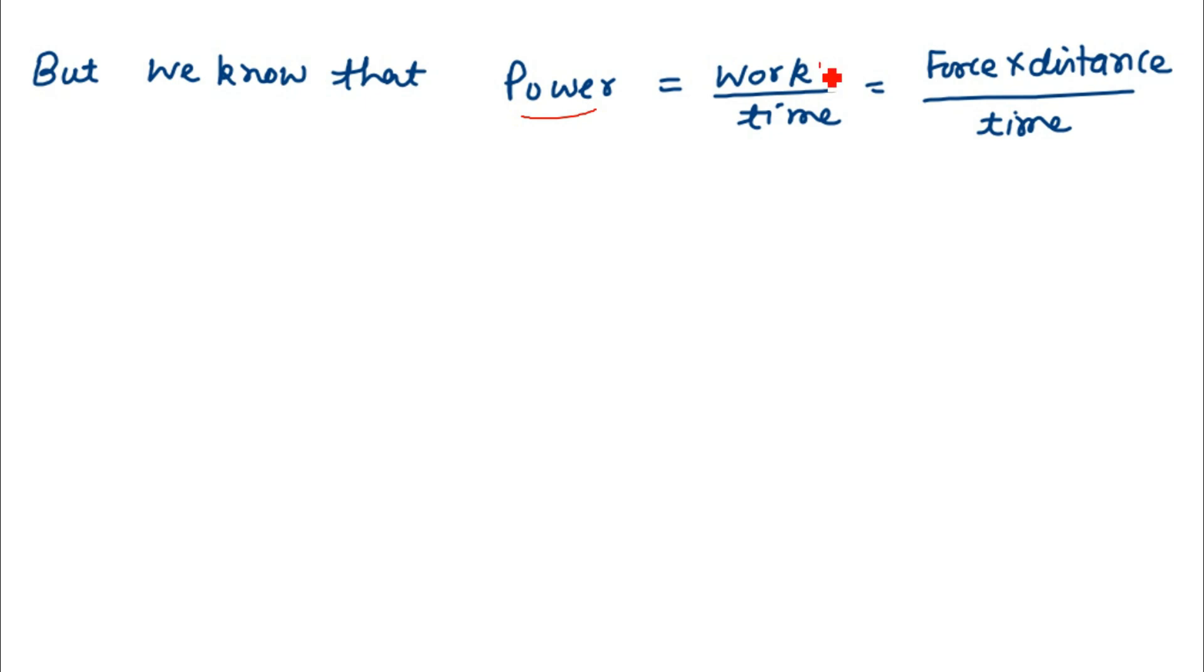Power equals work divided by time. Also, work is given by force times distance. So if we put this value of work, power becomes equal to force multiplied by distance divided by time.